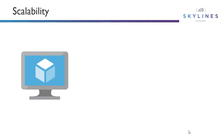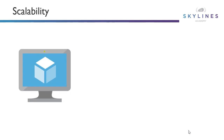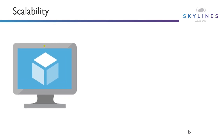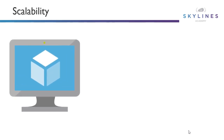Another way to look at it: vertical scaling is about increasing the size of that workload. You can see it gets bigger because it's still the same workload — we're just throwing more CPU, throwing more memory at it. That is your vertical scaling.